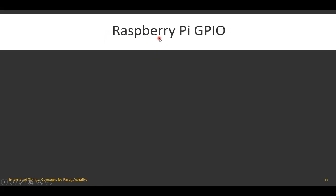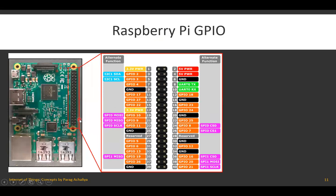An important part is the Raspberry Pi GPIO pin diagram. If you hold the Raspberry Pi with the USB and Ethernet ports at the bottom, the 40 pins are visible at the top. Pin numbering runs from pin 1 to pin 40, with pin 39 and 40 at the far end.